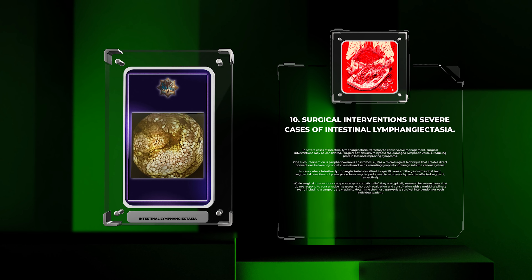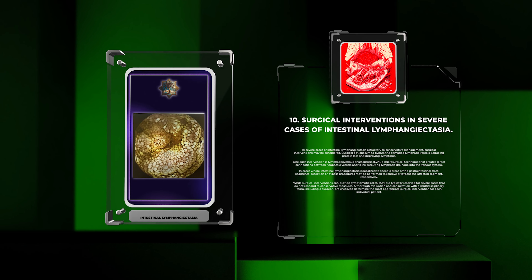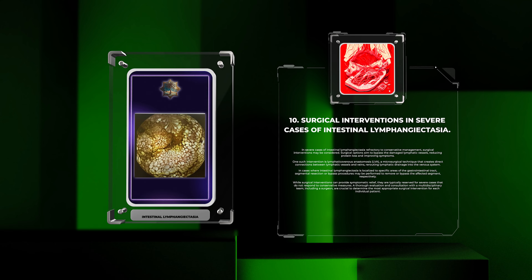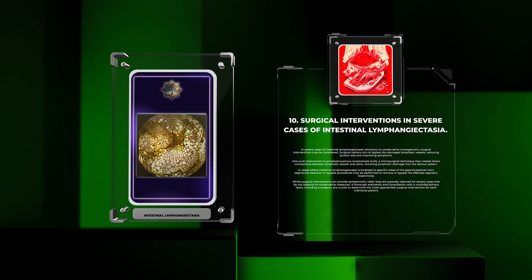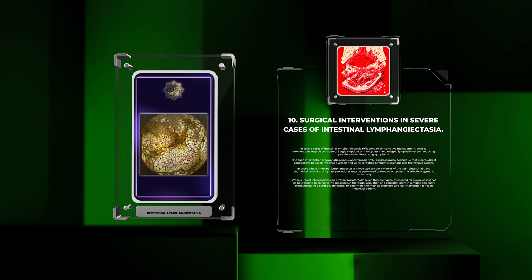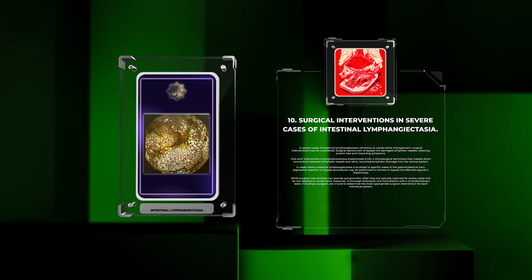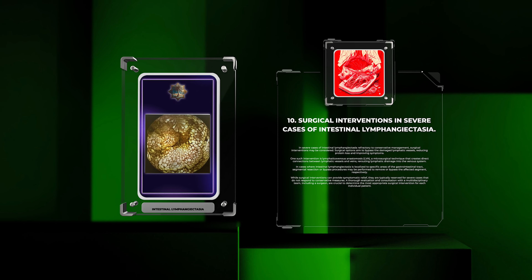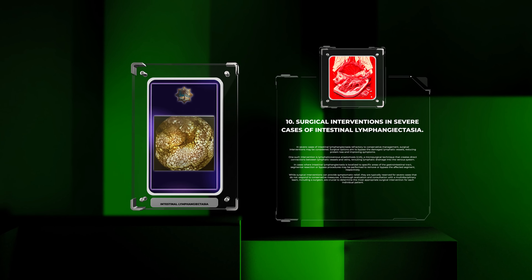In cases where intestinal lymphangiectasia is localized to specific areas of the gastrointestinal tract, segmental resection or bypass procedures may be performed to remove or bypass the affected segment. Surgical interventions are typically reserved for severe cases that do not respond to conservative measures, and a thorough evaluation with a multidisciplinary team is crucial to determine the most appropriate intervention.